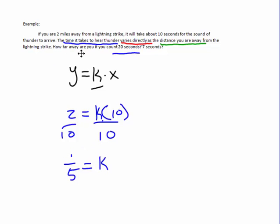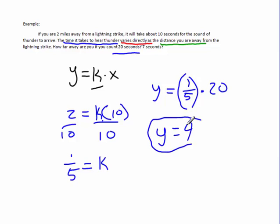How far away are you if you count 20 seconds between the time you see the lightning strike and the time you hear the lightning strike? Well, then that would tell us that y equals, and now k, we know k is 1 fifth, so we put 1 fifth in there, and we multiply that by 20. And 20 over 5 is 4, so we know that our distance away here has to be 4. We are 4 miles away.